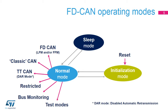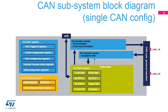Test modes include external loopback mode, where the controller treats its own transmitted messages as received messages, or internal loopback mode, where the controller can be tested without affecting a running CAN system. Upon a CPU request, the FD-CAN is in sleep mode, which operates at lower power. Note: in sleep mode, the internal pull-up is active on pin CAN TX.